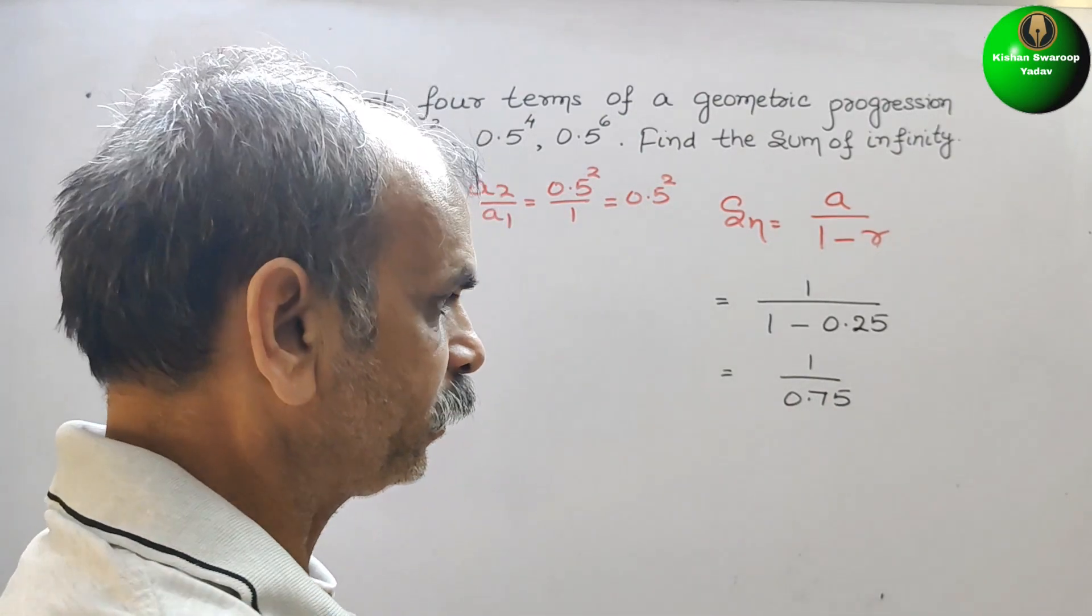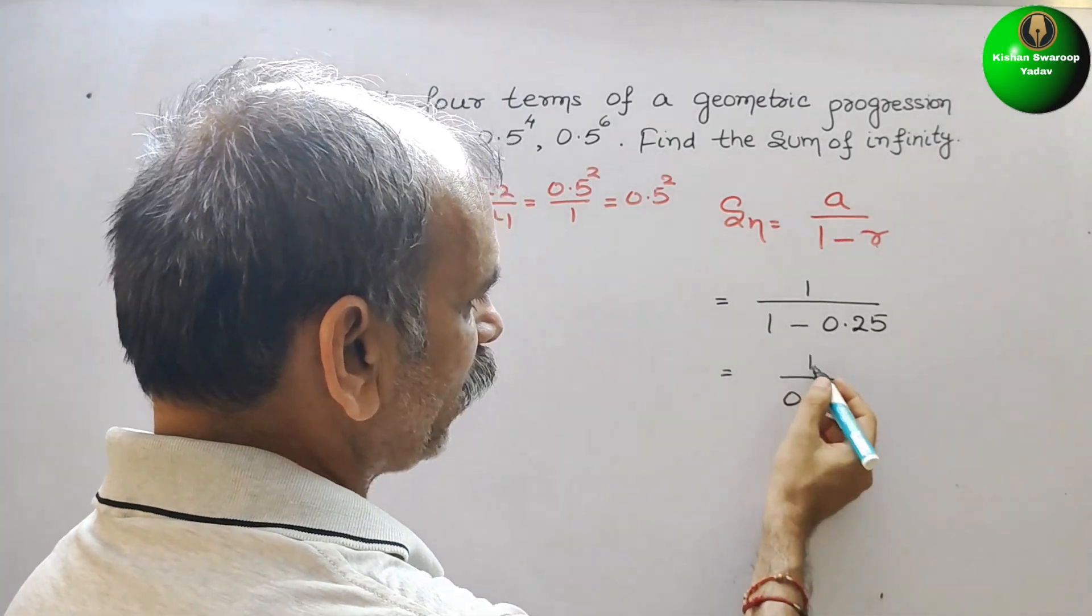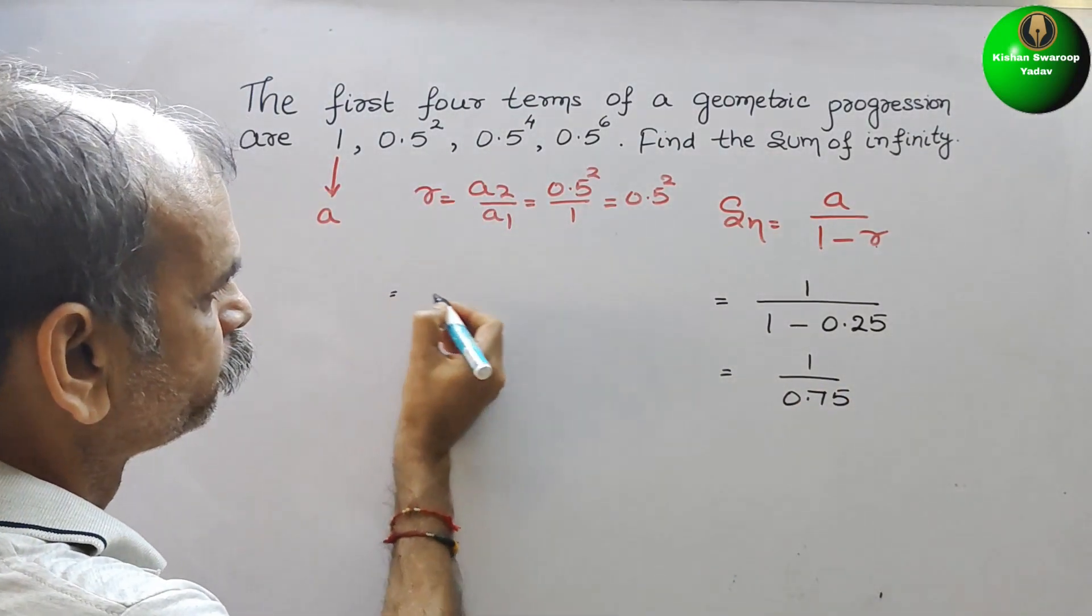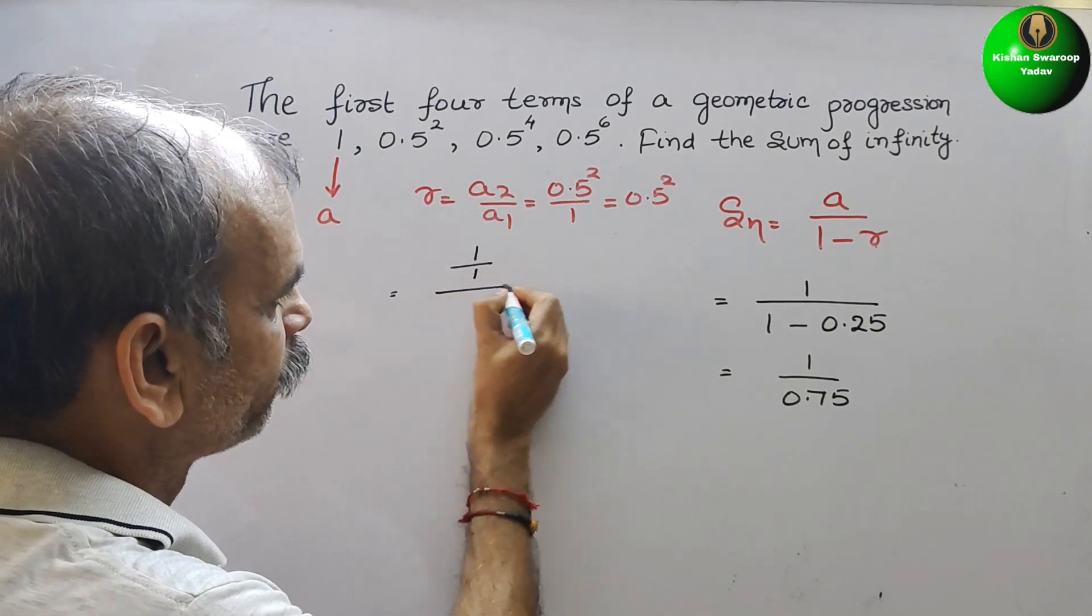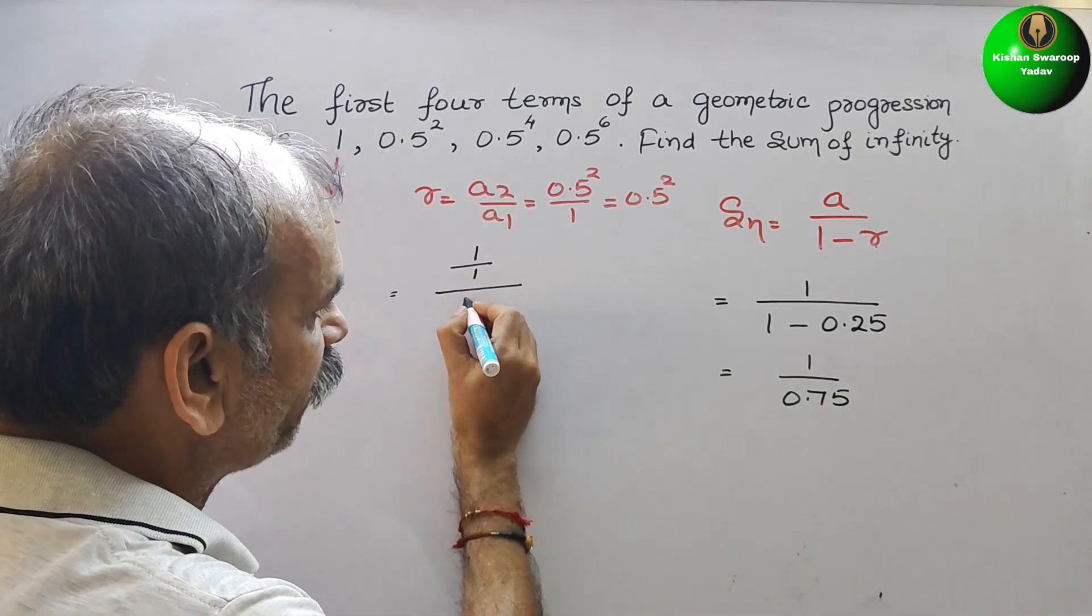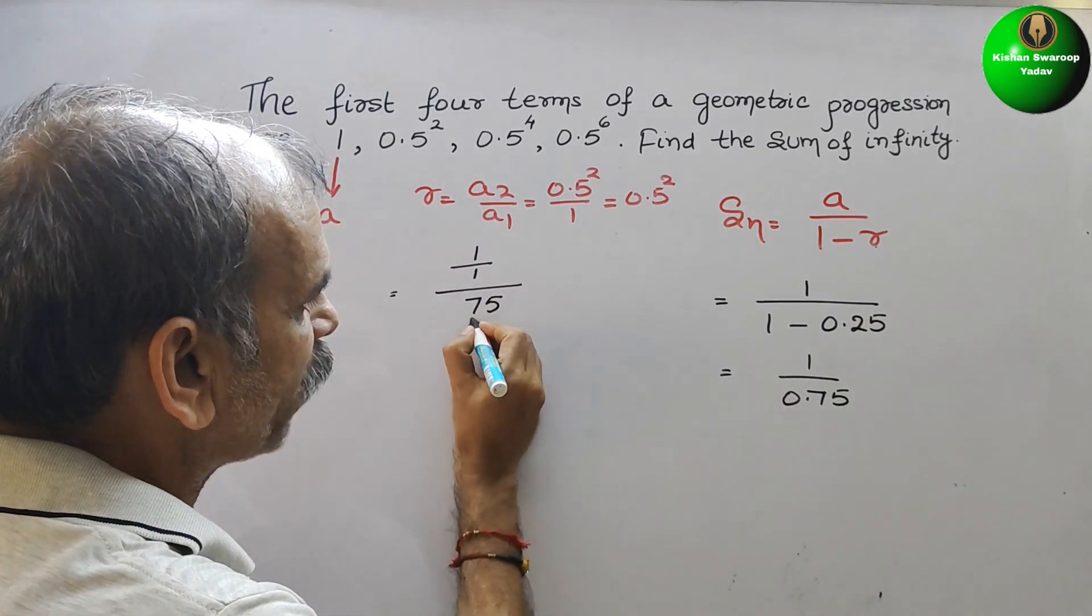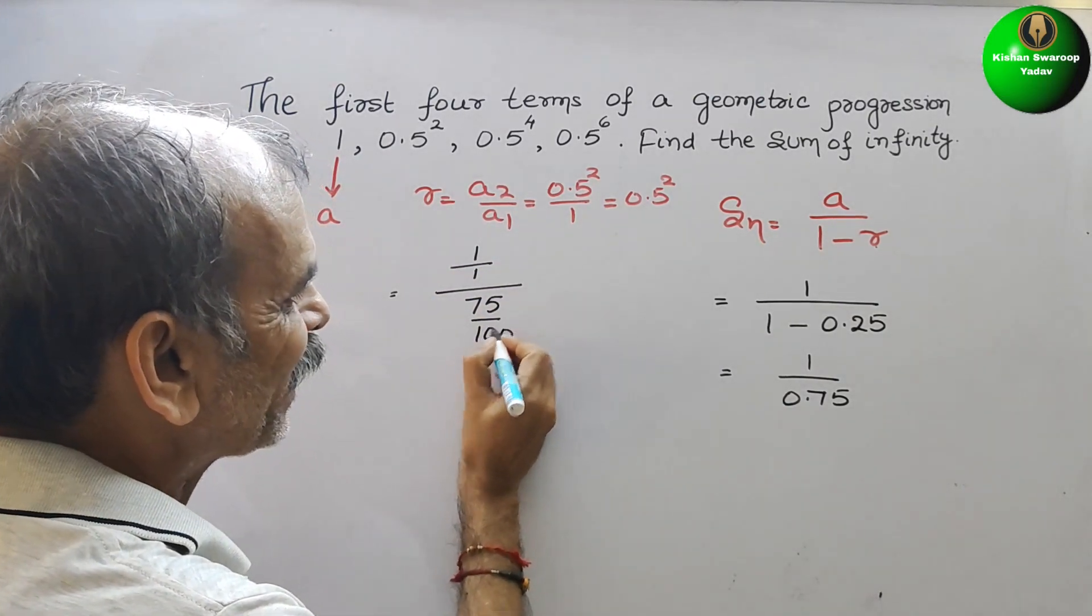That only we will write here. Now this value will be what? 1, we will write it as 1 by 1. And this 0.75, we will write it as 75 by 100.